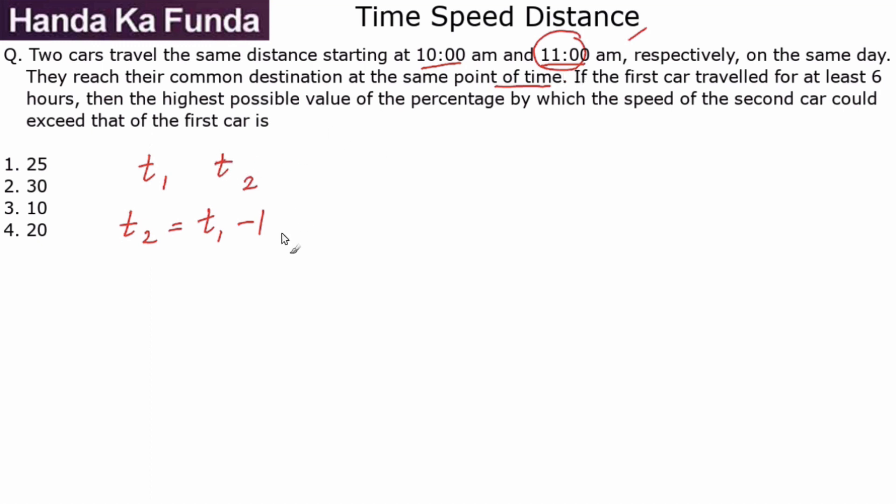They reach at the same time, so if it is starting one hour late, its total travel time will be lesser by one hour. If the first car traveled for at least six hours, that means t₁ is greater than or equal to 6, which would mean t₂ is greater than or equal to 6 minus 1, or t₂ is greater than or equal to 5.